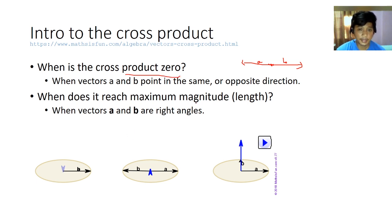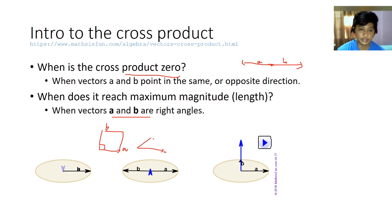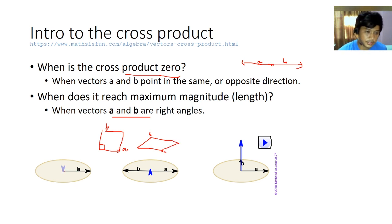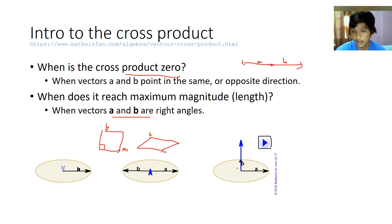Notice that the maximum length of the cross product is when A and B are at right angles to each other — like a square or rectangle, that is the maximum area you can make with two vectors. To summarize: A and B in the same direction gives no cross product; A and B in opposite directions gives zero cross product; and A and B at right angles gives the maximum possible cross product value.